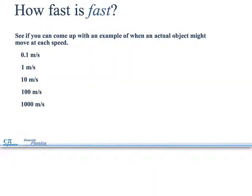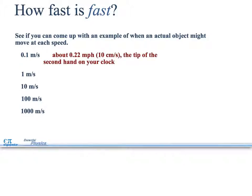See if you can come up with an example of when an actual object might move at each speed. So all these are different speeds. What might move at these speeds? About 0.22 miles per hour, the tip of the second hand of your clock will move at about this speed. This is 2.2 miles per hour. This is a slow walk.